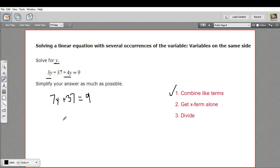Next, we want to get the variable term alone. I have to get rid of this 37. To get rid of it, I do the opposite. It says plus 37, so I subtract 37.